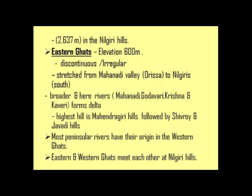The Eastern Ghats have an elevation of about 600 meters and are discontinuous or irregular. They run from Mahanadi Valley in Orissa to the Nilgiris in the south. Eastern Ghats are much broader compared to the Western Ghats. Rivers like Mahanadi, Krishna, Godavari, and Kaveri form deltas here. The highest hill in this region is Mahendra Giri Hills. Eastern and Western Ghats meet each other at the Nilgiri Hills.